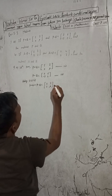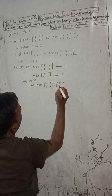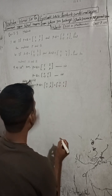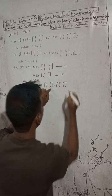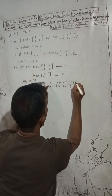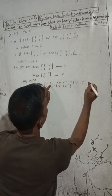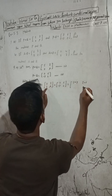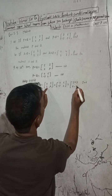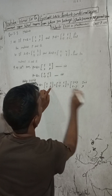Adding the two matrices: [5, 2; 0, 9] plus [3, 6; minus 3, 2]. So element-wise: 5 plus 3, 2 plus 6, 0 plus minus 3, 9 plus 2.